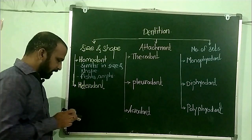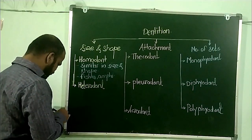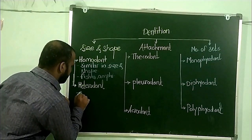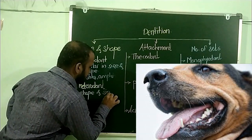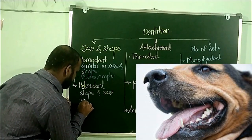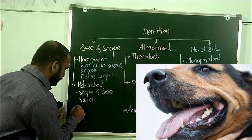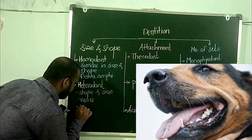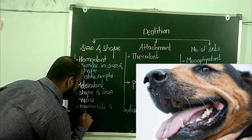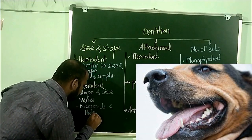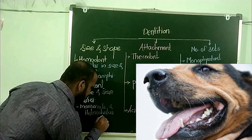In case of the Heterodont condition, the shape and size of the teeth varies. The examples include mammals and the Heterodontus shark.